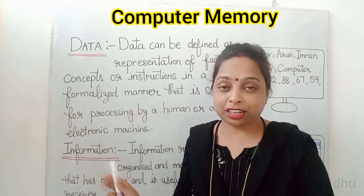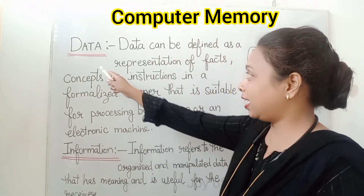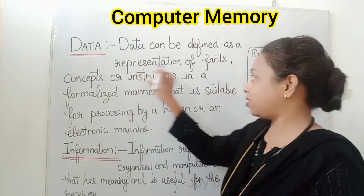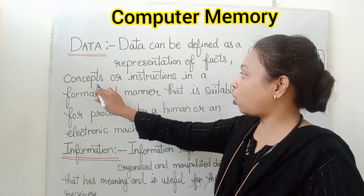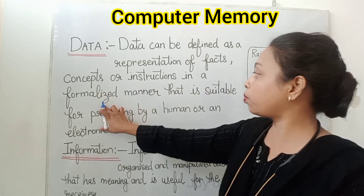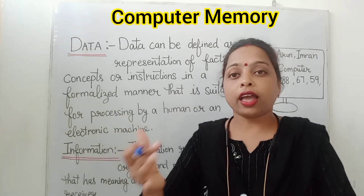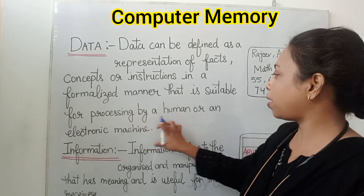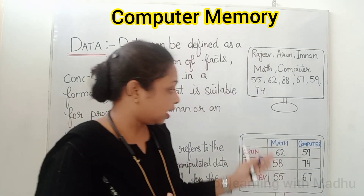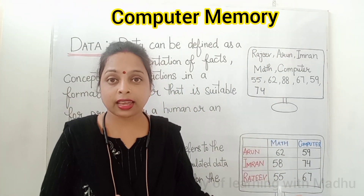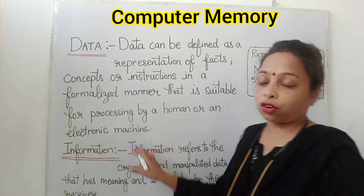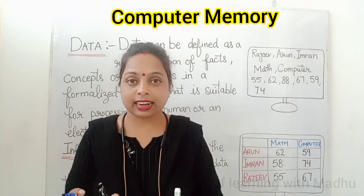Let us read the definition now. Data can be defined as a representation of facts, concepts and instructions in a formalized manner that is suitable for processing. It can be processed by a human or by an electronic method, such as a list made by a human or by a computer.